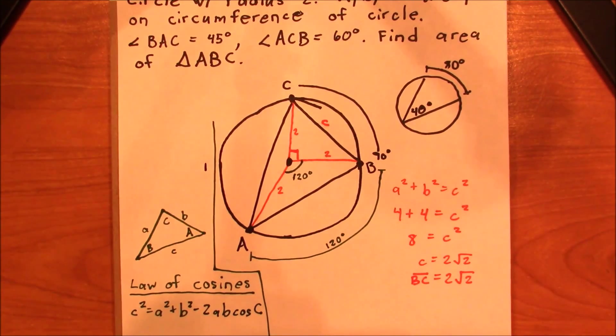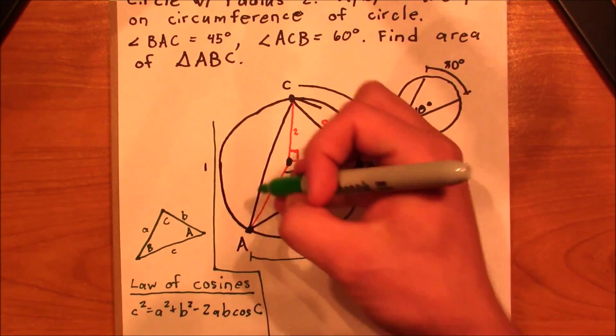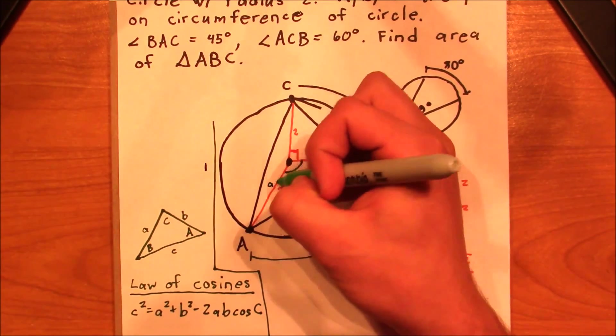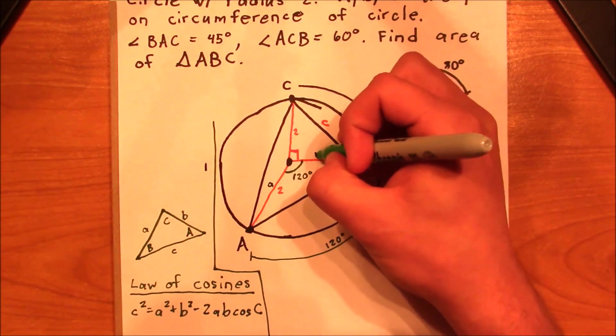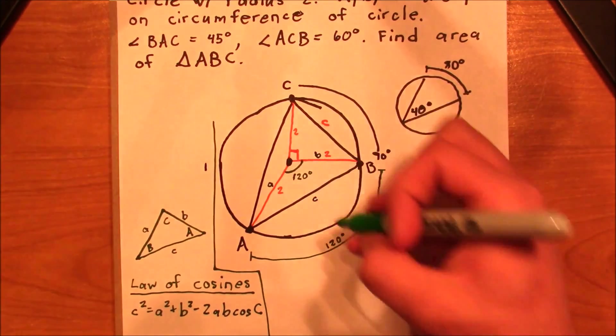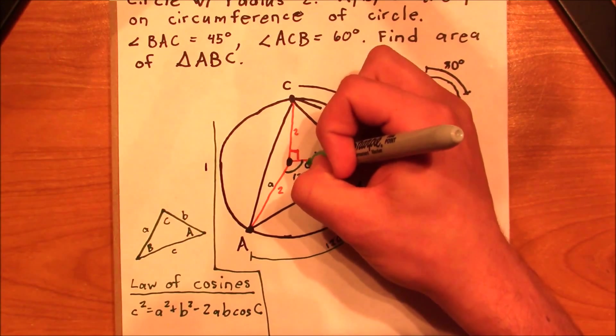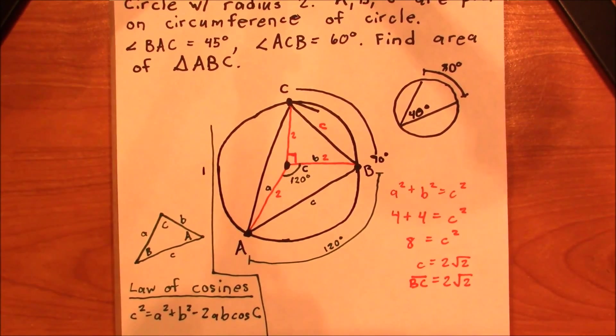And in this particular instance, we happen to have all the variables. We know that this is going to be a, this is going to be b, and then this is going to be c, and this angle right here is going to be capital C.